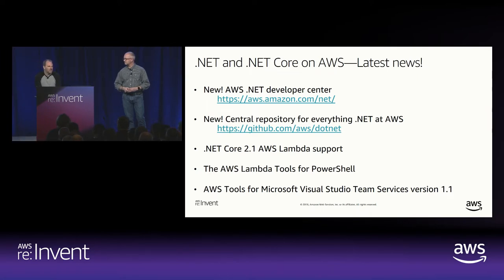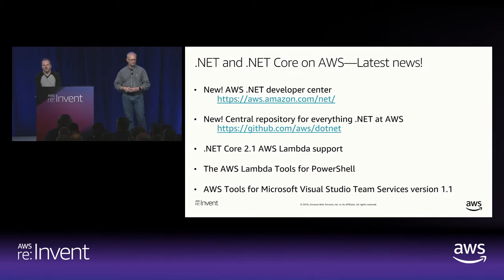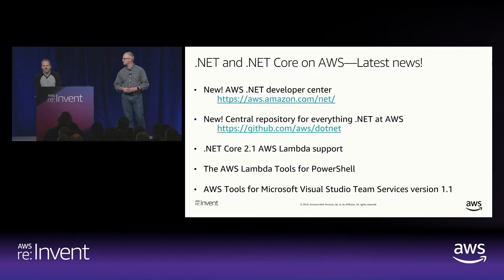I would highly recommend anyone doing Lambda be on .NET Core 2.1. When we did .NET Core 2.0, that was a special exception because Lambda only supports long-term supported versions of runtimes, and 2.0 was not long-term support. But it had more compelling features over 1.0. Now Microsoft has taken 2.0 out of support, so I'd highly recommend everyone move to 2.1, which has a three-year lifecycle from Microsoft.